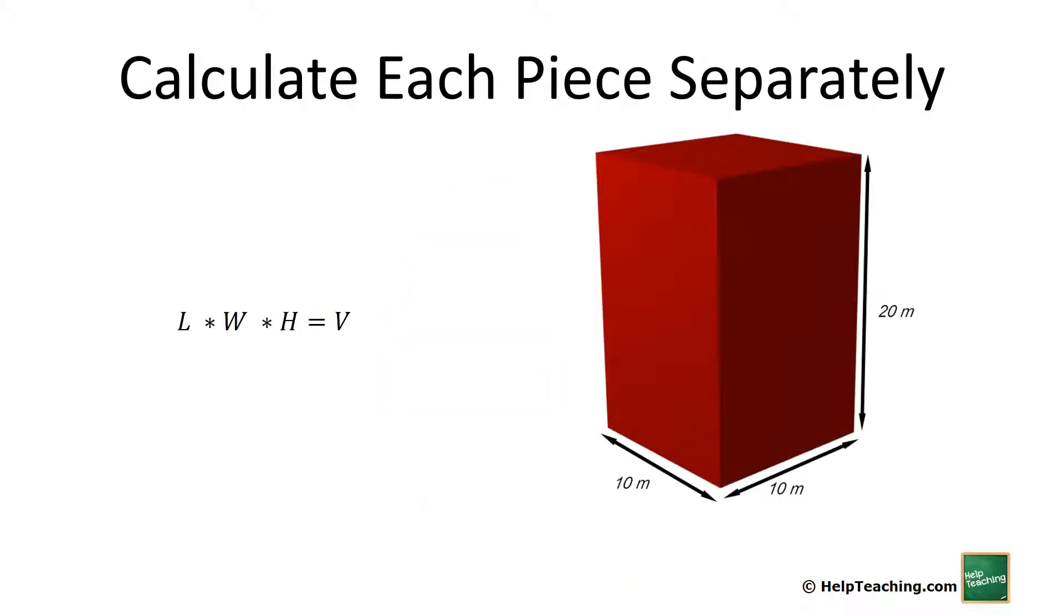In this case, this is the main body and you can see from the diagram on the other screen that it was 10 meters by 10 meters by 20 meters. This is a basic rectangular prism, so length times width times height gives us our volume: 10 times 10 times 20 gives us 2,000 cubic meters for the main body.